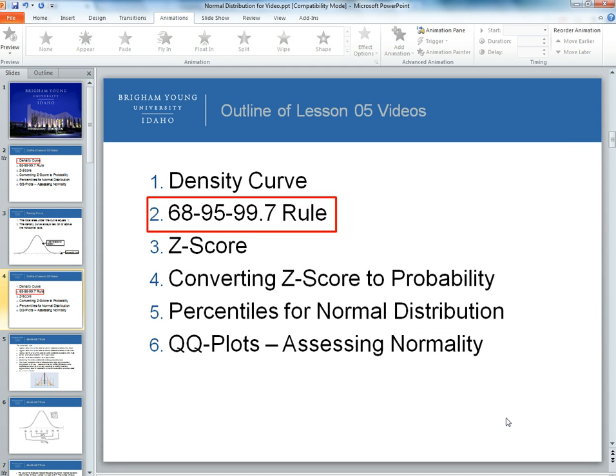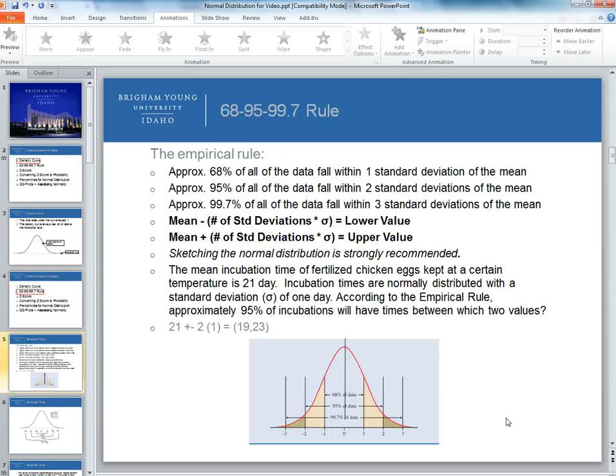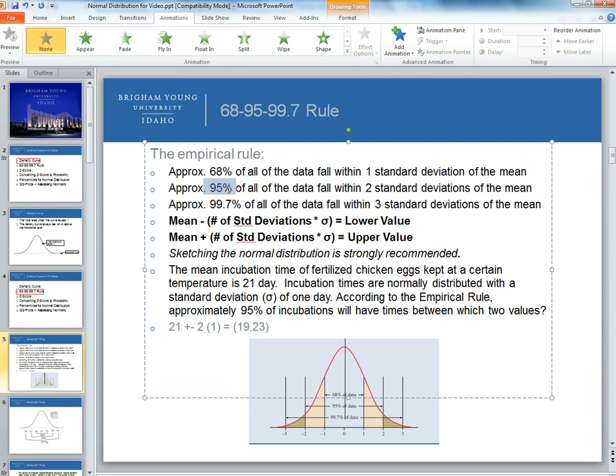Okay, so now with the normal distribution, let's talk about the 68-95-99.7 rule. The empirical rule is that approximately 68% of all data fall within one standard deviation away from the mean, and then approximately 95% of all the data fall within two standard deviations of the mean, and then 99.7% of all data fall within three standard deviations away from the mean. And what we can do is that when we are concerned about how many standard deviations we are from the mean, we can determine, for instance...